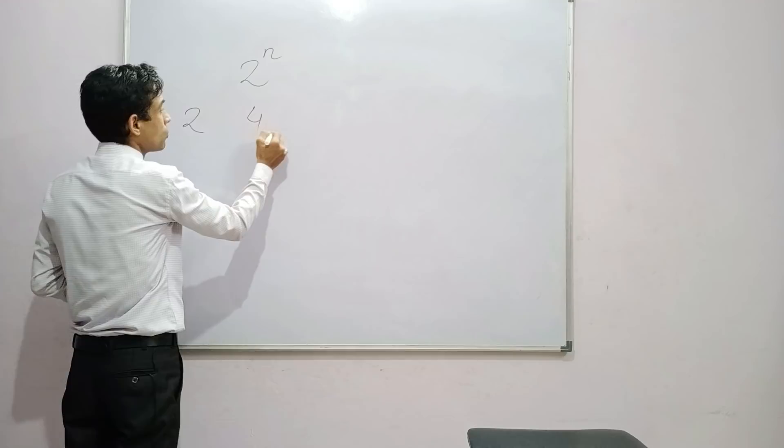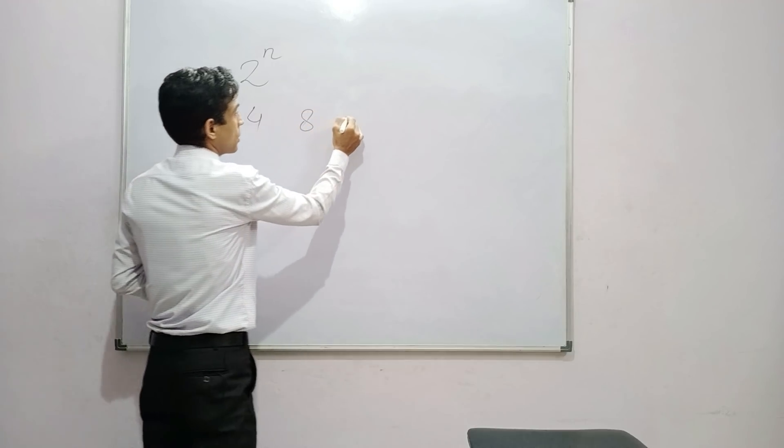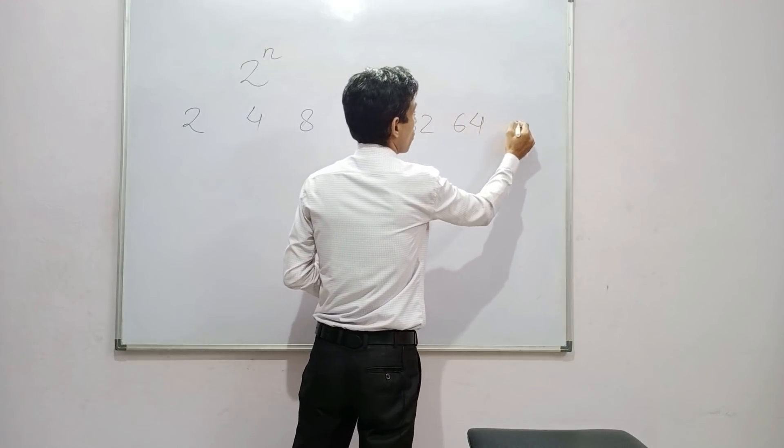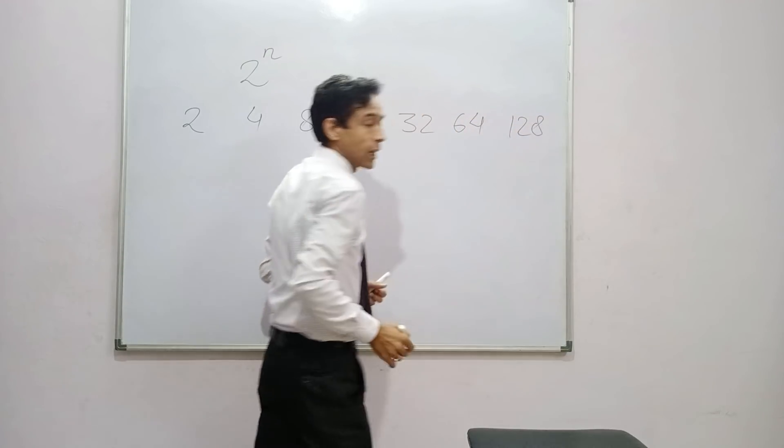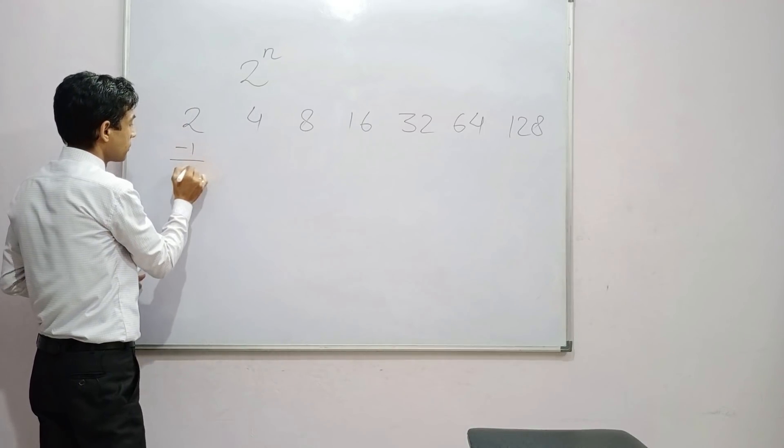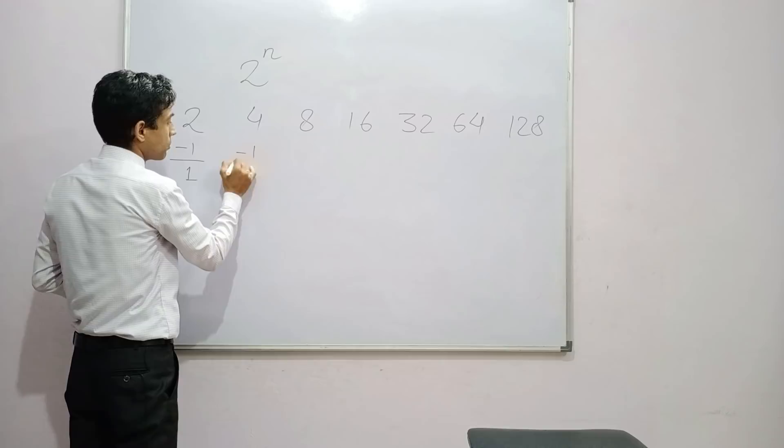For example, 2, 4, 8, 16, 32, 64, 128. And now let's take 1 from all these numbers. Then we will get some other numbers.